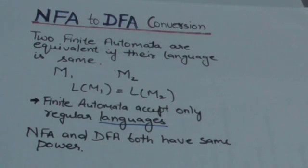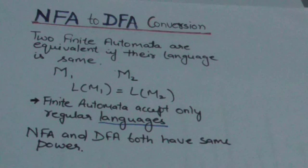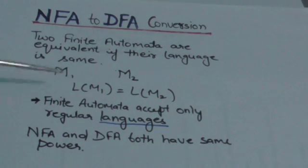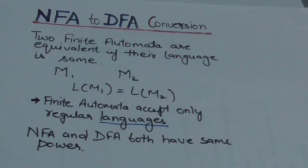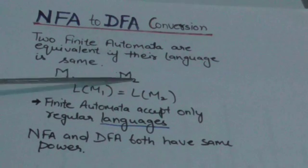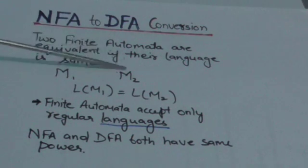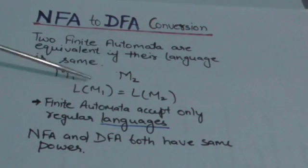Welcome back to this tutorial. Our next topic is NFA to DFA conversion. One thing to know about finite automata is that they accept only regular languages. For each automata we have a language associated with it, which is the set of strings accepted by that automata. Suppose we have two automata M1 and M2 with languages LM1 and LM2 respectively — they are equivalent if their languages are the same, meaning LM1 equals LM2.